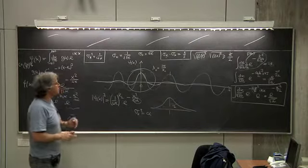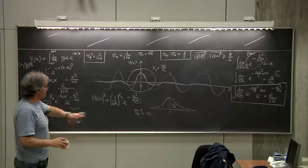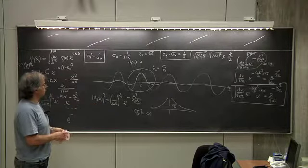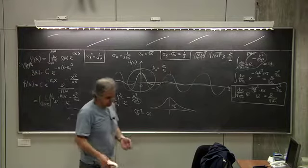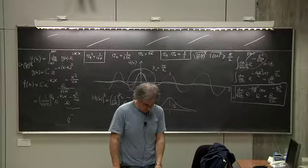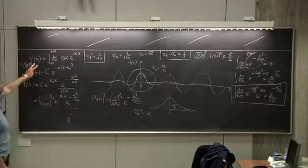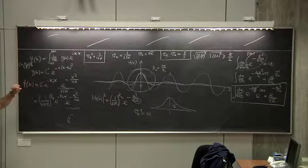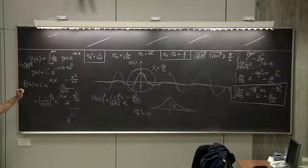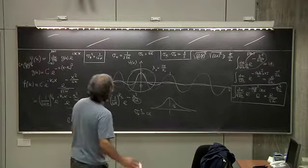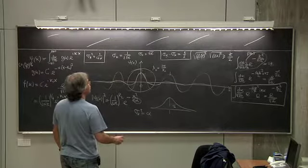So these Gaussians realize the minimum uncertainty allowed by the Heisenberg uncertainty principle. This is like a photograph of our wave packet at a given time — time has made no appearance until now. It's a fixed-time object. Now let us consider time.